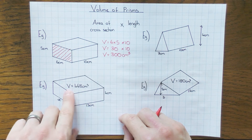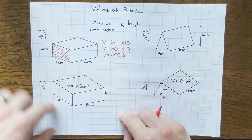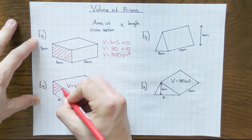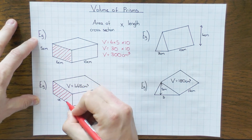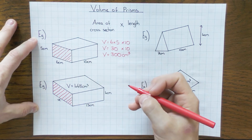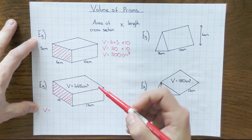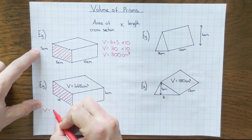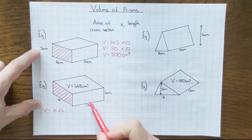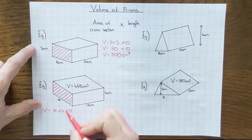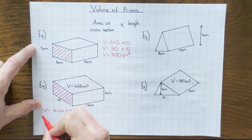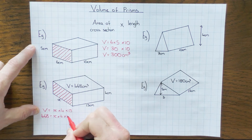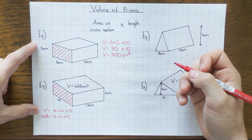Now in this case it's again a cuboid, but I've been given the volume and I need to work out a missing length. We're going to imagine we have the cross section here. The formula for the volume was the area of the cross section — so that would be the base, which is x, times by the height which is 4, and then times by the length which is 13. I'll substitute the volume in: 468 equals x times 4 times 13. I'm a massive fan of the flowchart in this situation just to avoid any confusion.